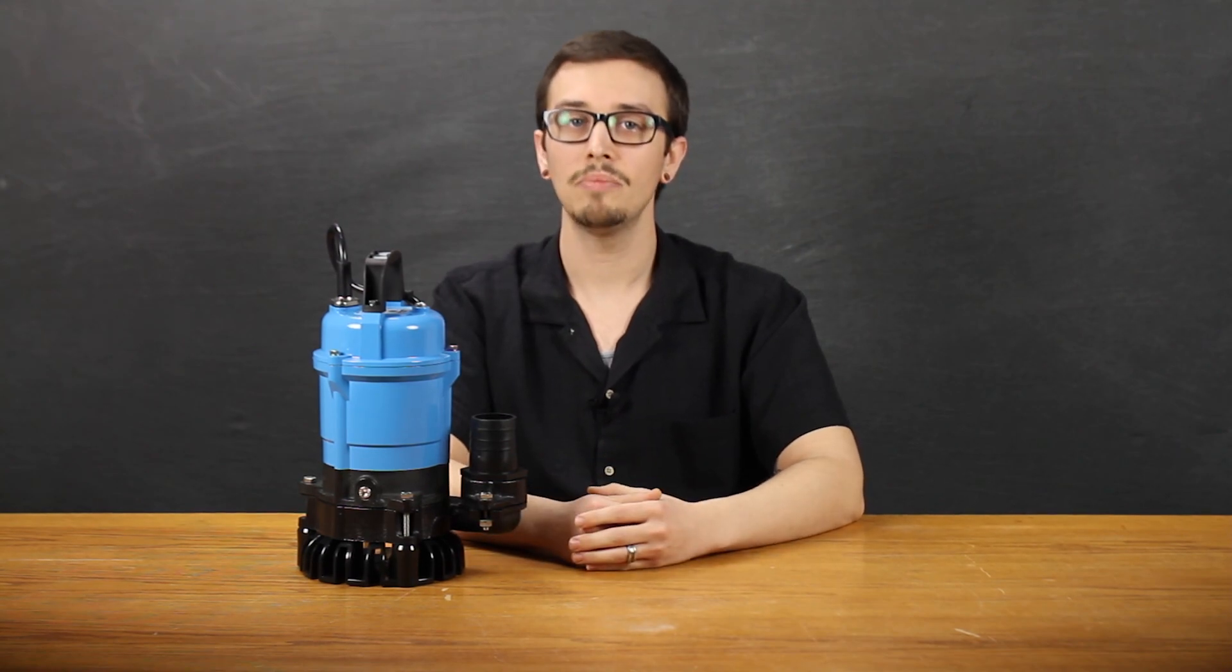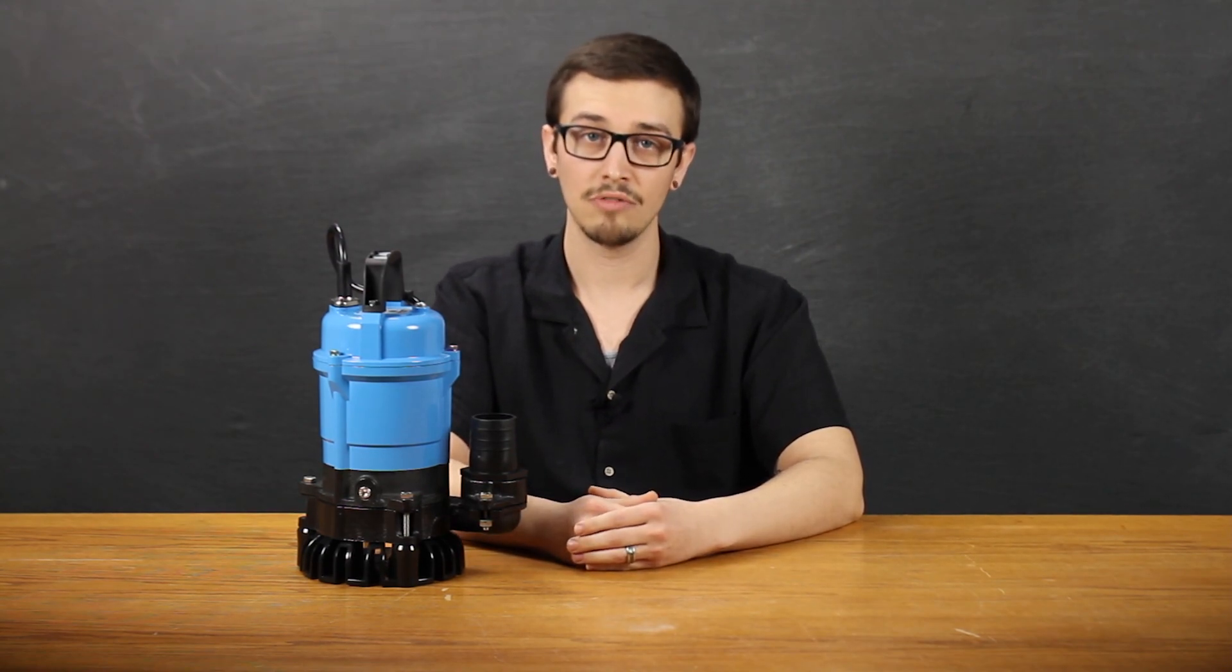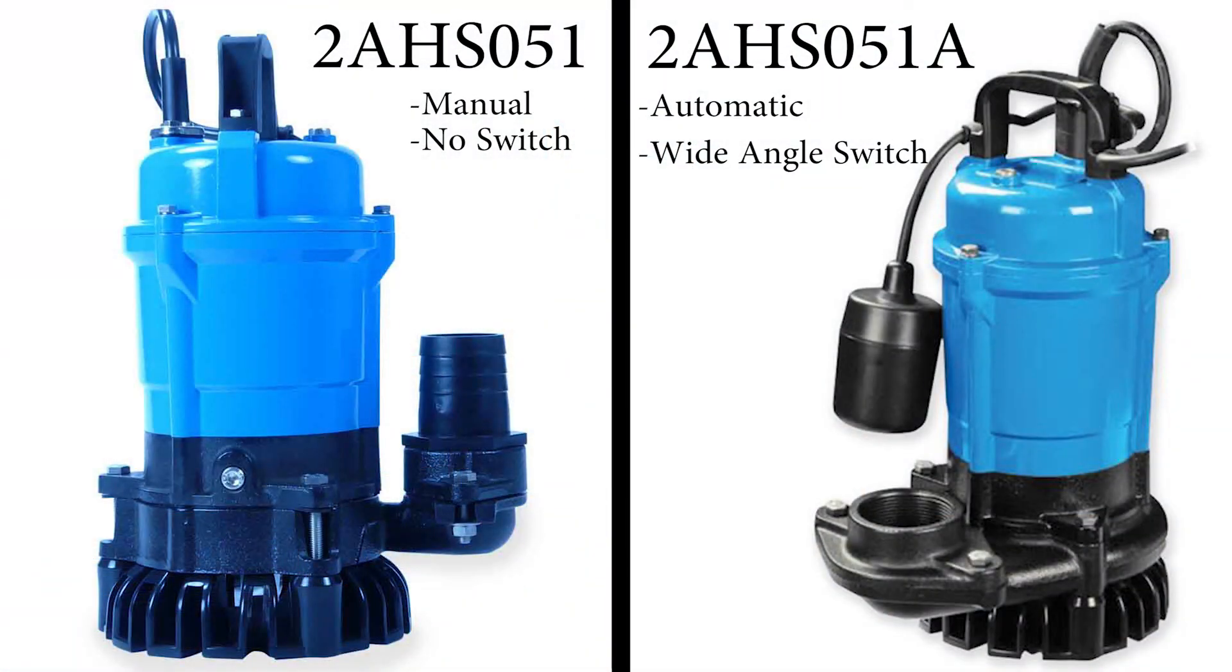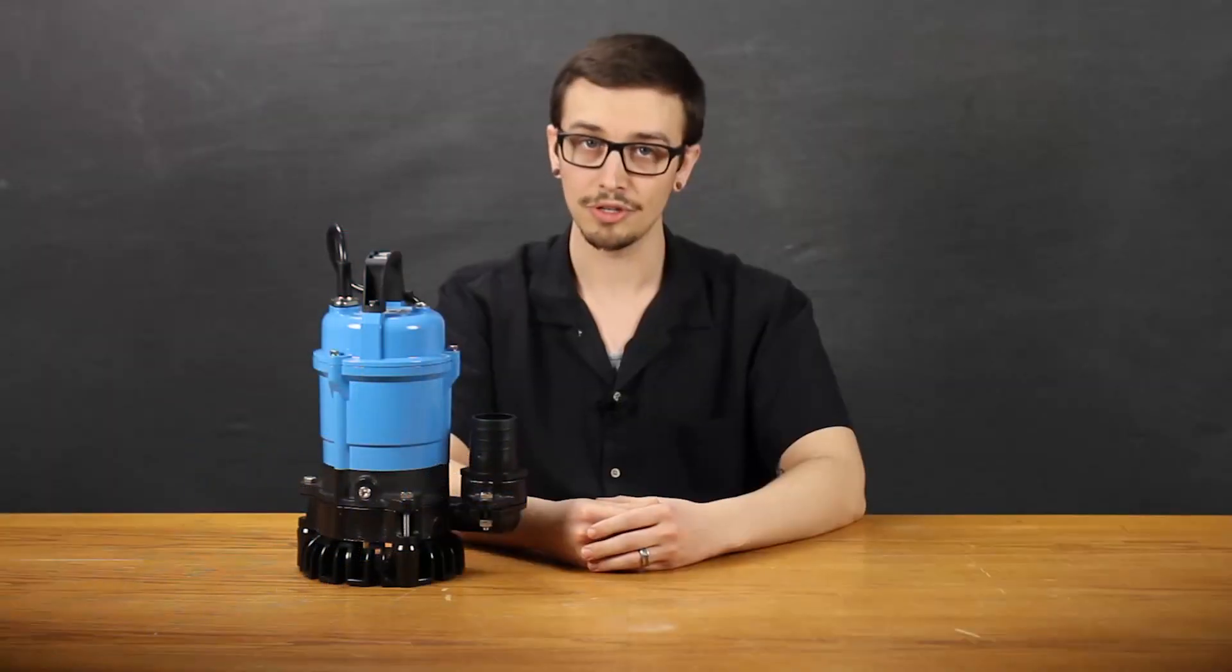This particular pump comes in manual or automatic configurations, with the automatic version signified by an A at the end of the part number, and it includes a wide-angle float switch. The manual version comes with no switch.